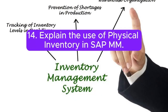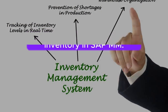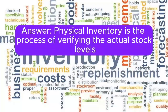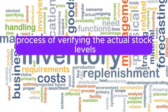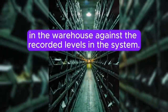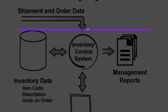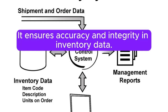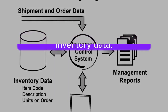Question 14: Explain the use of physical inventory in SAP MM. Answer: Physical inventory is the process of verifying the actual stock levels in the warehouse against the recorded levels in the system. It ensures accuracy and integrity in inventory data.